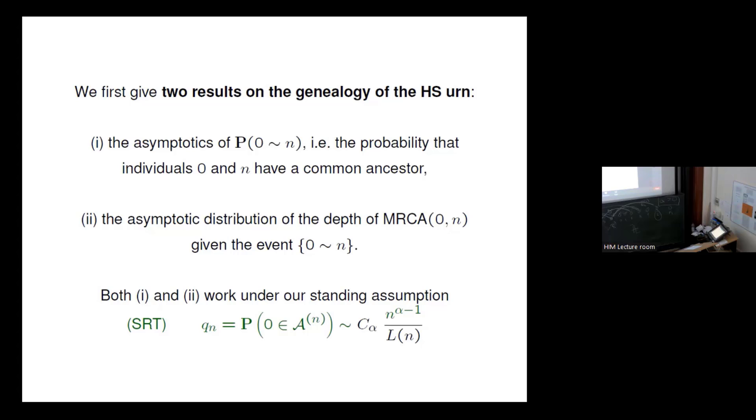Now, two results. First is the asymptotic probability of being related. So here is a type individual zero, here is individual n. We are in the forest situation. What's the probability that those two are related? And the second is the asymptotic distribution of the depth of the MRCA of two individuals. Zero and n. How far do you have to go back to find their common ancestor, given that they are related? Because they might not be related. Or in the discrete case, they can be related, they might not, and so on. And both work under our standard assumption of Karawena, this Karawena-Dhoni story, SRT.